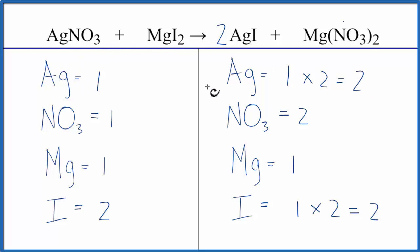Let's fix the silvers. That looks like it will also fix the nitrates as well, so we double the silvers to two, and that should double the nitrates to two.